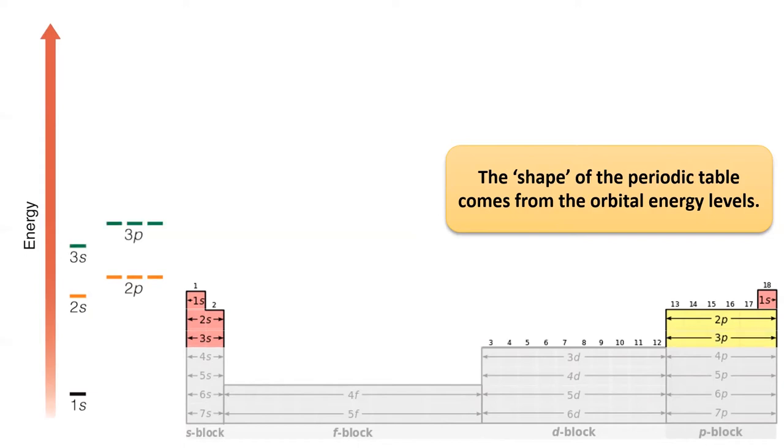Next, we filled the 3S and the 3P subshells, which also fit eight total electrons, making the third row of the table eight elements wide as well.